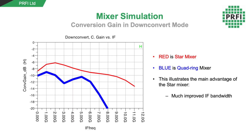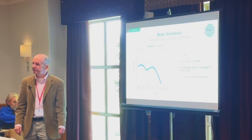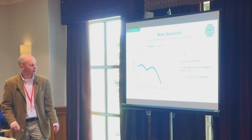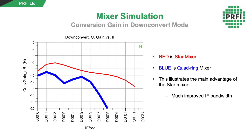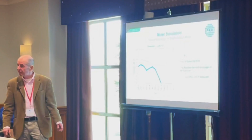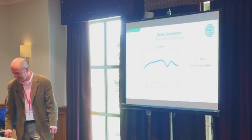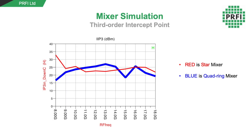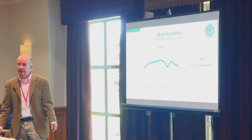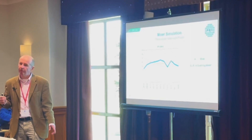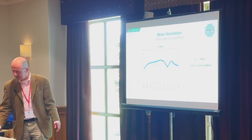Looking at performance versus IF: at around 6.6 GHz the quad ring rolls off sharply — the RF short can no longer be both a good RF short and a good IF open. The star mixer, however, valiantly carries on up to around 11 GHz, well into the RF frequency range. For power compression performance, the quad ring is very slightly better, though we're not entirely sure why. The IP3 is very similar — nothing to choose between the two — with IP3s of about 23 dBm. When we measured this mixer it did achieve that level, driven with about 15 dBm LO power.